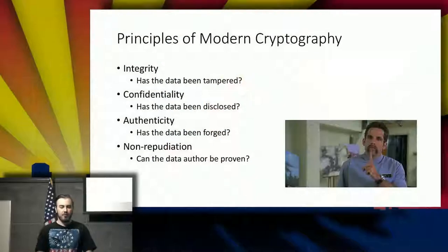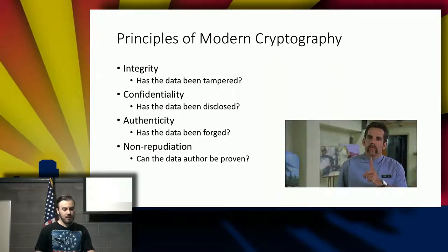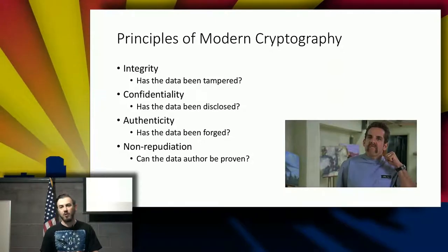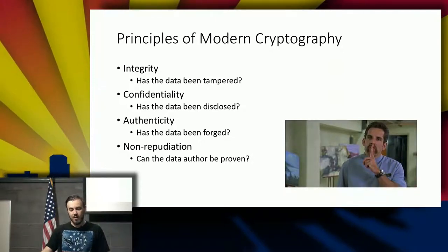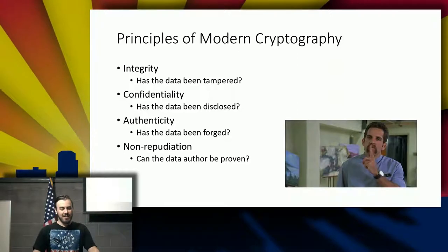In modern cryptography there are four principles that we have to look out for. We have to look out for integrity — has the data been tampered with? Confidentiality — has the data been disclosed improperly? Authenticity — did we forge it, or basically something happened where our sender is no longer actually our proper sender? And also non-repudiation — basically, can the author be proven? So we're looking at not just whether the information is secure, but whether we can verify the author and that the information we got is actually the information that was sent.